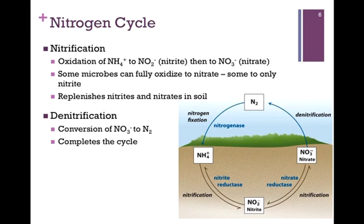We saw that nitrogen fixation extracts nitrogen gas from the air and converts it to ammonia. There is also a process of denitrification, where we convert nitrates to nitrogen gas, and that completes the cycle. In order for this cycle to function, we need organisms that contribute each one of these components. All living organisms on planet Earth require nitrogen — it's simply the form of nitrogen that might vary. With this nitrogen cycle, each organism is supplied with the form of nitrogen that it needs.